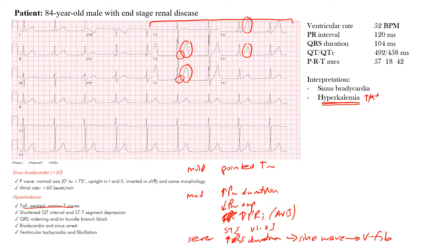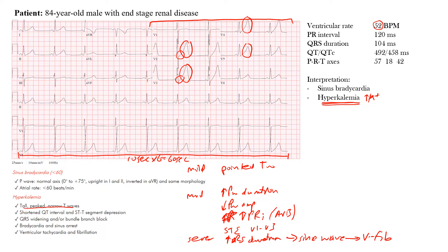Now let's look at the EKG. The rate given is 52 beats per minute. We can verify this: from beginning to end of our EKG represents 10 seconds, times 6 equals 60 seconds. Counting the complexes across gives us 9, and 9 times 6 gives a rate of about 54 beats per minute — close to the given value. The PR interval here is 120 milliseconds.